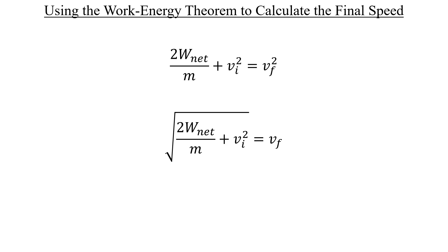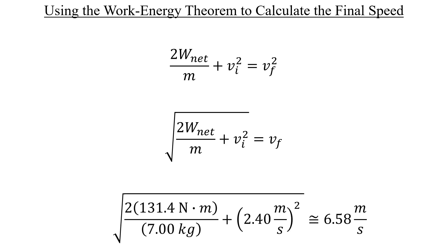When we plug in our numbers and report our answer to the proper number of significant figures, which is 3, we end up with the following result, a final velocity of 6.58 meters per second. And that's it for this problem. Thanks for watching, everyone. Have a great day.